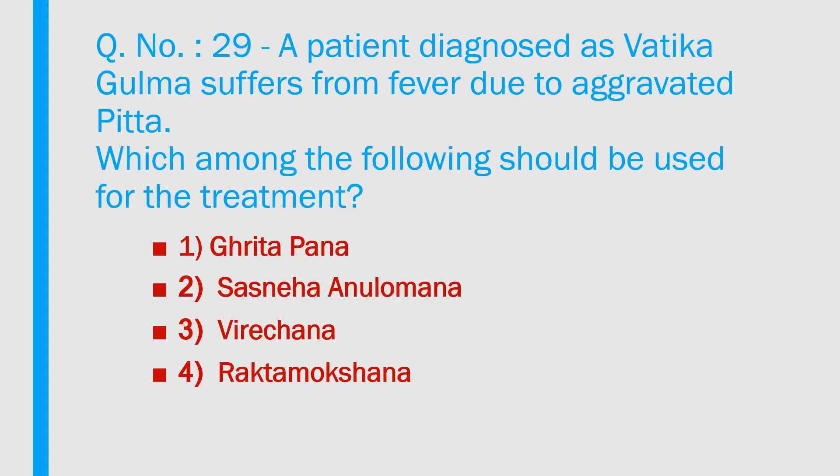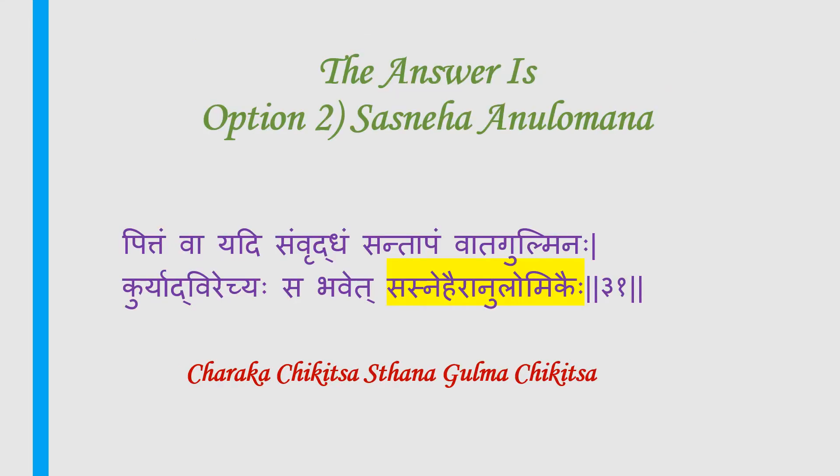Question number 29: A patient diagnosed with vadiga gulma suffers from fever due to aggravated pitta. Which of the following should be used for treatment? 1) Grudapana, 2) Sasneha anulomana, 3) Virajana, 4) Rekta mokshana. Answer is option 2 — Sasneha anulomana. Pittam samvriddham sandabam vada gulminahah kuryadvirijaha sabhaved sasneha anulomikaihi. Reference: Charaka Chigilsa Sthana, Gulma chigilsa.